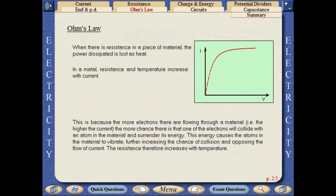When there is resistance in a piece of material, the power dissipated is lost as heat. In a metal, resistance and temperature both increase as current is increased. This is because the more electrons there are flowing through a material, the more chance there is that one of the electrons will collide with an atom in the material and surrender its energy. This energy causes the atoms in the material to vibrate, further increasing the chance of collision and opposing the flow of current. The resistance therefore increases with temperature.